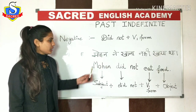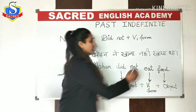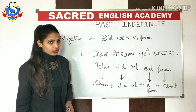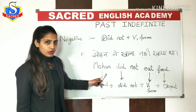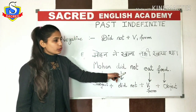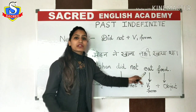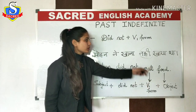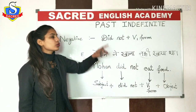Negative sentence mein 'nahi' ka istamal kiya jata hai. In English, we have to go according to the rule: 'Mohan did not eat food.' 'Did not' — as per the rule — and then after that we use the verb's first form, which is 'eat,' and at the last there is the object 'food.' This is how you write a sentence in negative form, according to the rule only.